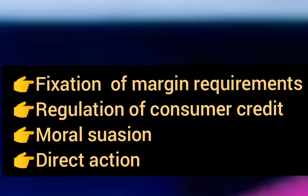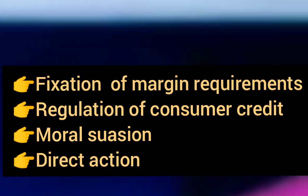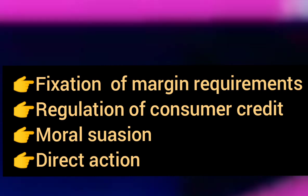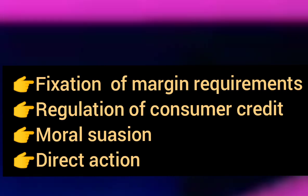Next, moral suasion. This is where the central bank uses discussion and persuasion with commercial banks to ask them to follow certain credit guidelines. It is not a legal issue, but through moral persuasion the central bank influences commercial bank credit behavior.